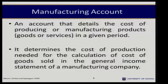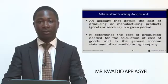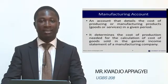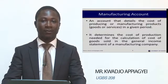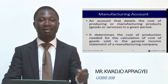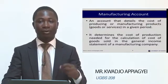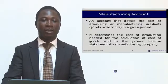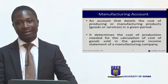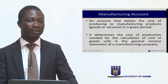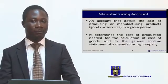When we want to determine the cost of production — which is needed for calculation of the cost of goods sold in the general income statement for a manufacturing concern — the account which details out the various costs for the goods which have been manufactured in a given period is what a manufacturing account refers to.